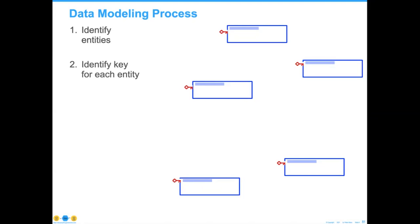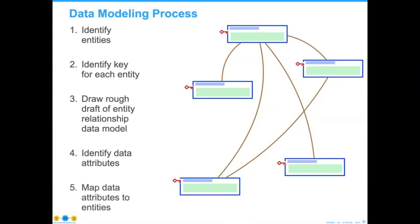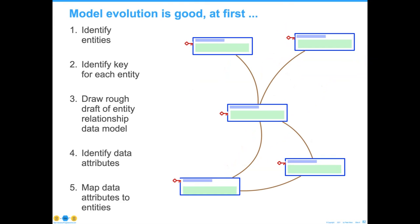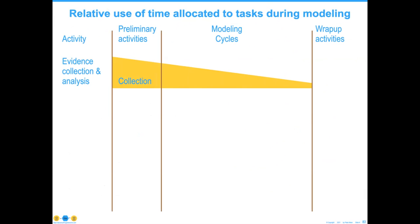The process for doing data modeling is typically taught as follows: you identify entities — business things about which you're going to create, read, or update information. You identify a key for each entity. You draw a rough map of the relationships. You take the attributes and assign them among the various entities where they should be — each attribute generally showing up in one and only one place, with the exception of the keys. And this is the part hard to get across to young people: this is your first version, but you're likely going to evolve that model.